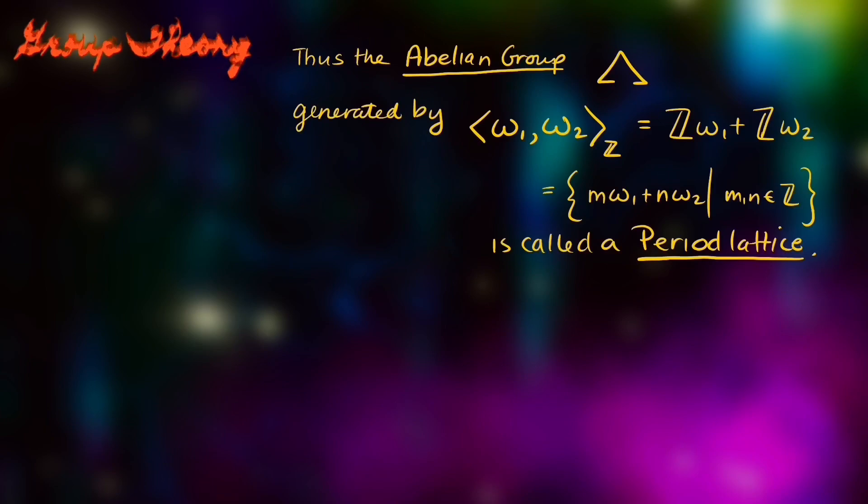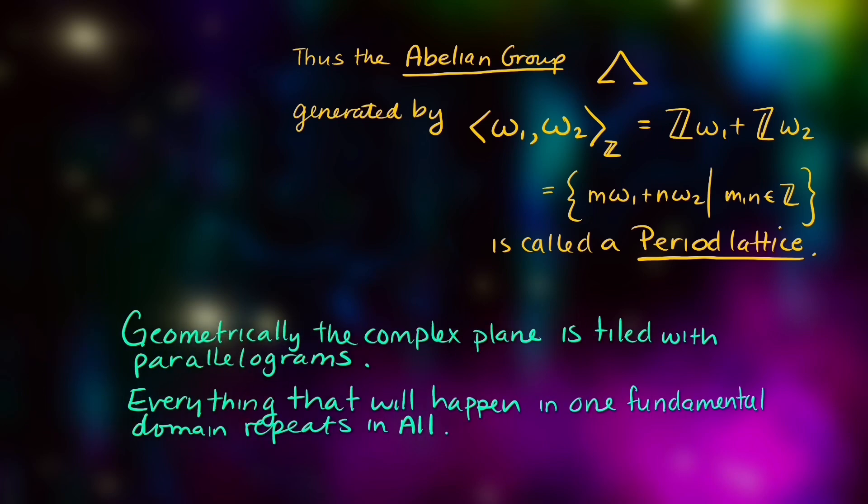Let the abelian group lambda be the abelian group generated by these periods over the integers, the set of all linear combinations where m and n are integers. This period lattice will geometrically tile the plane, and everything that will happen in one fundamental domain will repeat in all fundamental domains.